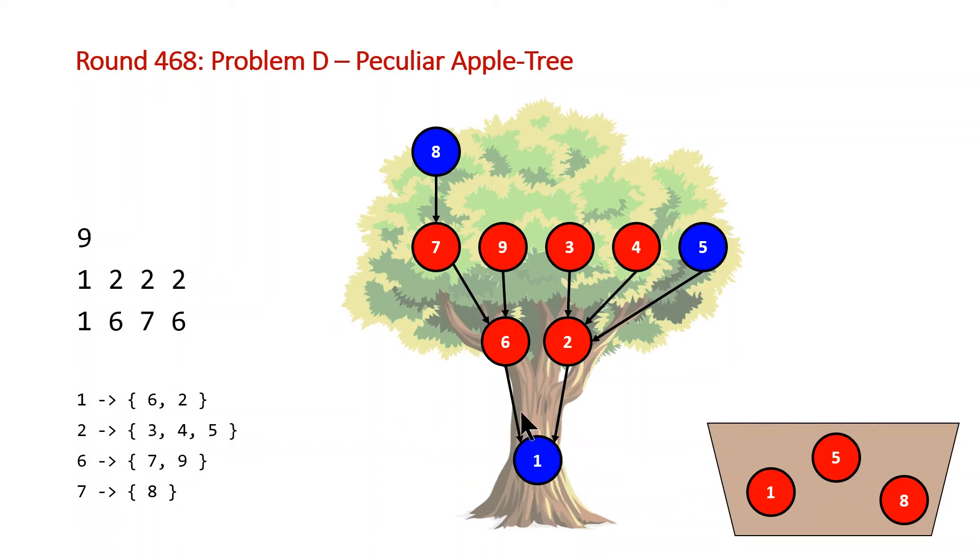Inflorescence number one can connect to inflorescence number six and two. For two it connects to three, four and five, so on and so forth. And then from there we can use a simple depth first search algorithm to keep track of how many apples are at each level.